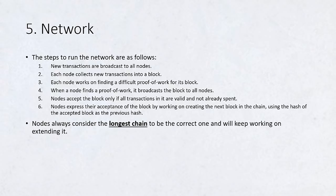Nodes always consider the longest chain to be the correct one and will keep working on extending it. If two nodes broadcast different versions of the next block simultaneously, some nodes may receive one or the other first. In that case, they work on the first one they received, but save the other branch in case it becomes longer. The tie will be broken when the next proof-of-work is found and one branch becomes longer. The nodes that were working on the other branch will then switch to the longer one.